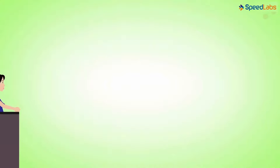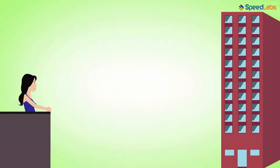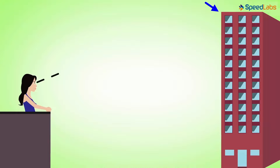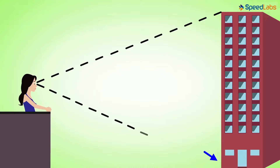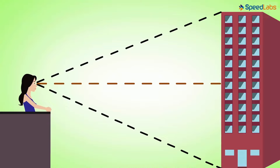Here is a simple problem for you to make sure that you have understood this concept well. Suppose a girl is standing in a balcony of a bungalow and looking straight at a neighbouring building which is taller than her bungalow. When she looks at the top of the building, the line of sight is this one, and when she is looking at the bottom of the building, the line of sight is this one. And this is the horizontal line.